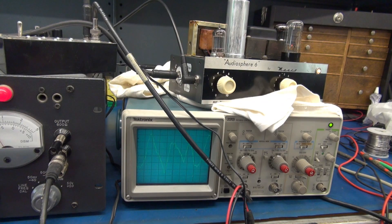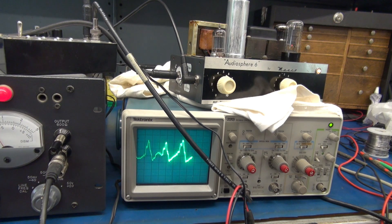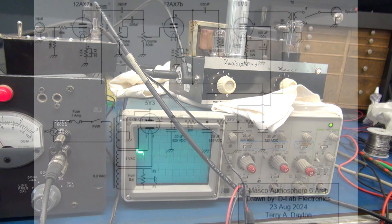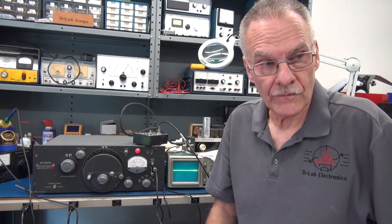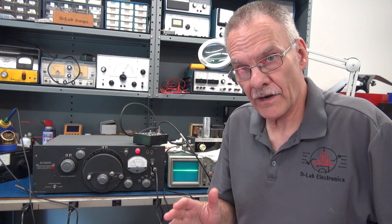So this is the Masco amp having a little burn-in time. I'm using a dummy load and a looper as the signal source. I'll have to let these things cook for a while, make sure nothing goes wrong, make sure they're stable.